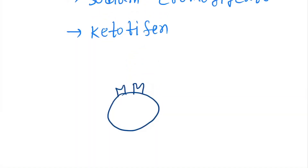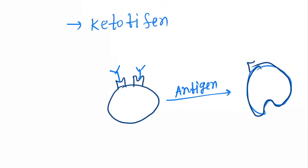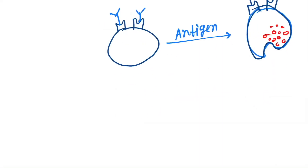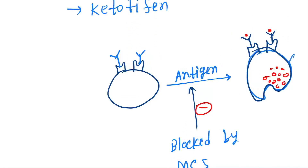Next are the mast cell stabilizers. The mast cell has receptors for IgE antibody. After catching the antigen, IgE comes and binds to the receptors and causes degranulation of the mast cell, releasing inflammatory mediators like histamine which causes bronchoconstriction. Mast cell stabilizers block this step, so degranulation cannot occur and inflammatory mediators like histamine cannot be released.